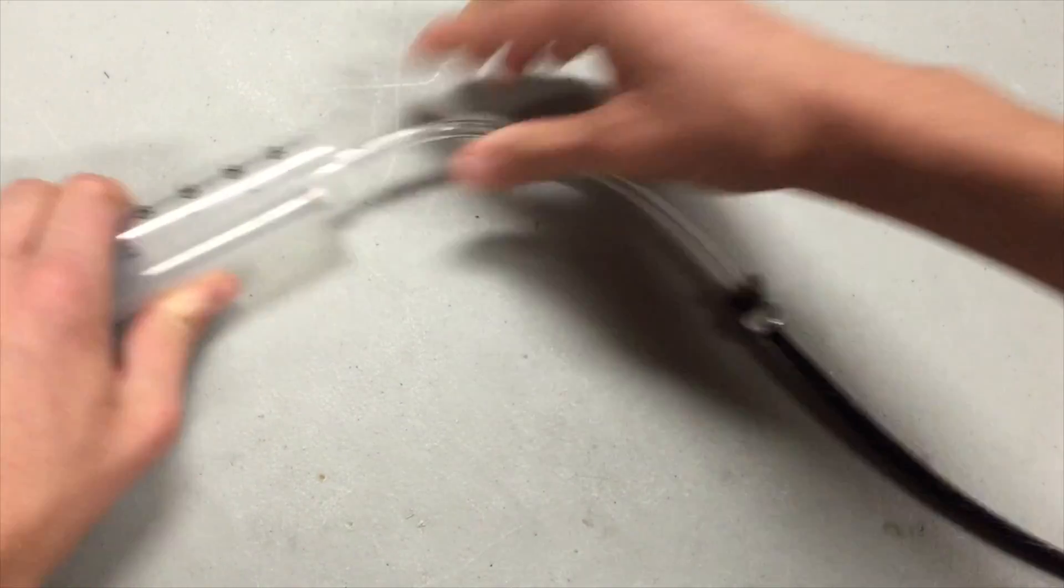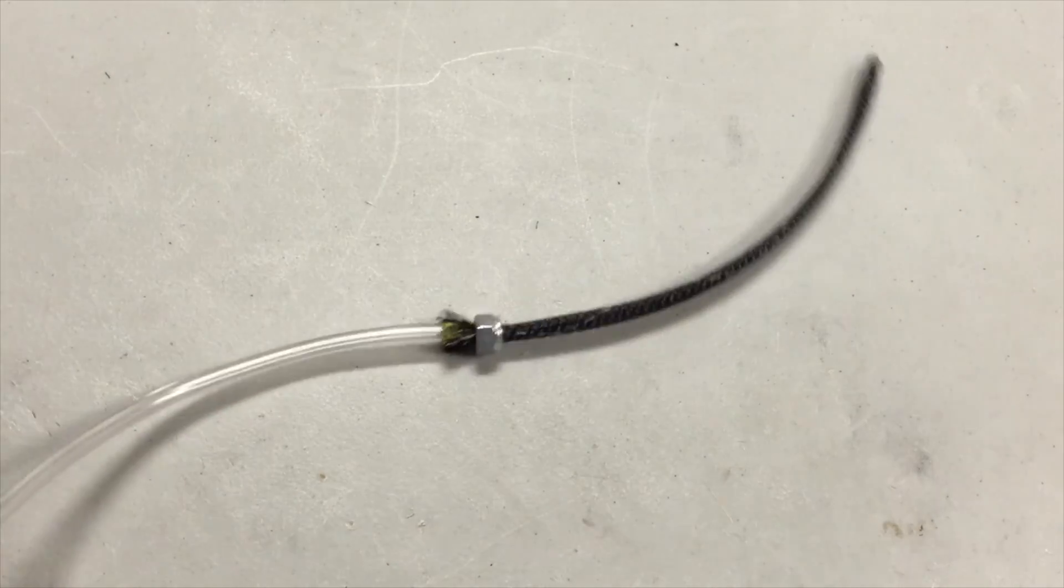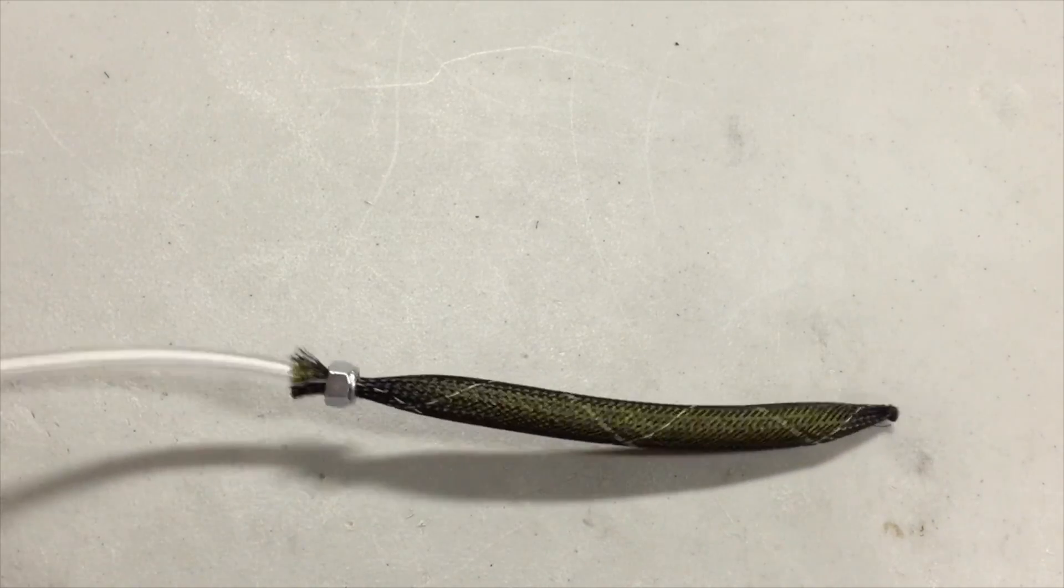After that you can connect the tubing to a syringe or pump and you can use your new McKibben air muscle.